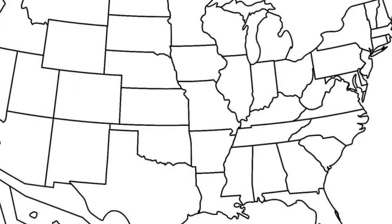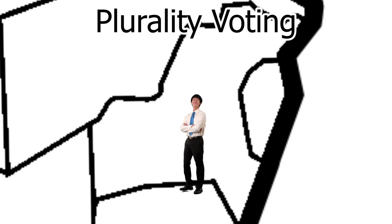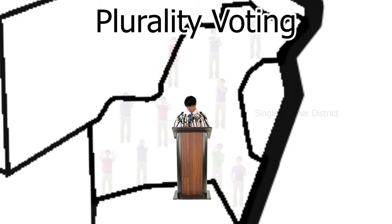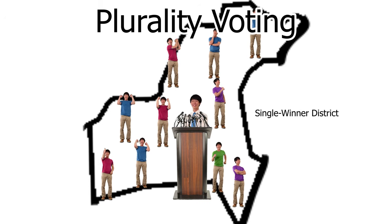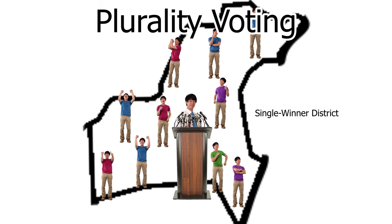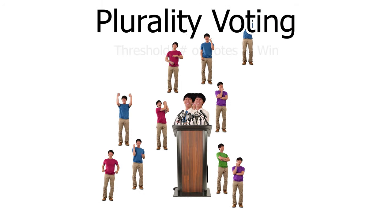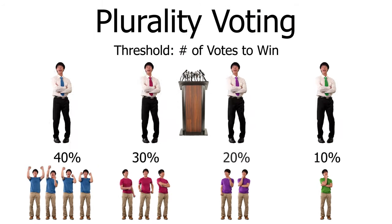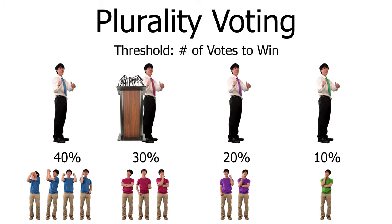In America, we use a single-winner voting method called plurality voting, meaning you only get to pick one candidate for one position. And we elect people within single-member districts — a winner-takes-all system. Let's take a look at our first factor: threshold. How many votes does it take to win? Easy, right? Whoever has the most votes.